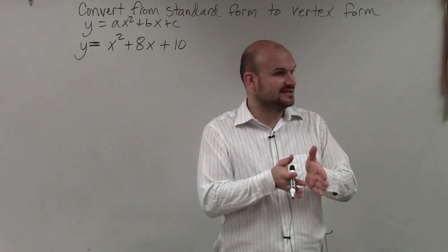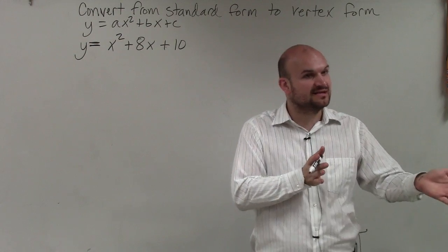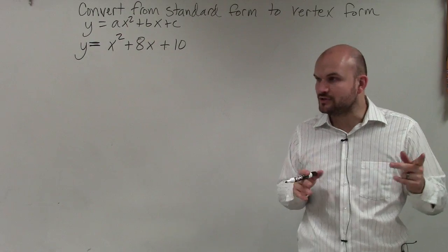Once you found the axis of symmetry, you plug that in to find the vertex. Then you found two points to the left and to the right.